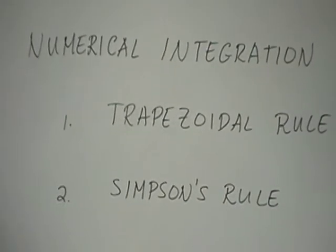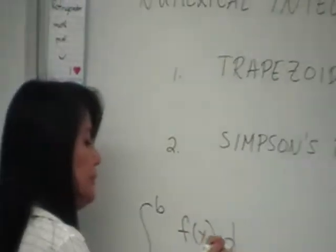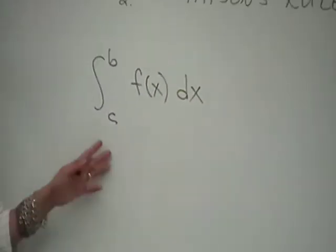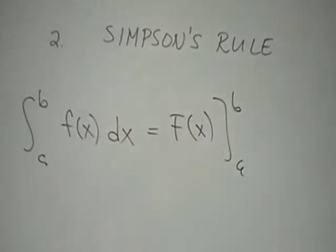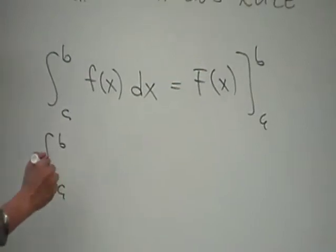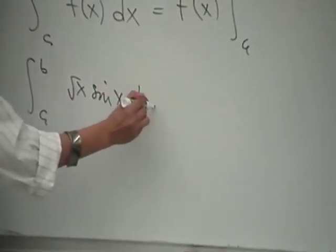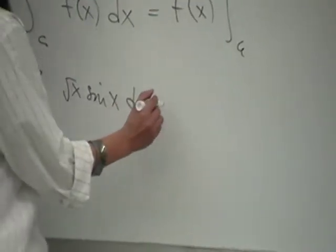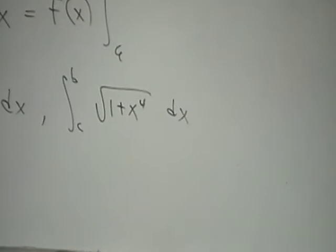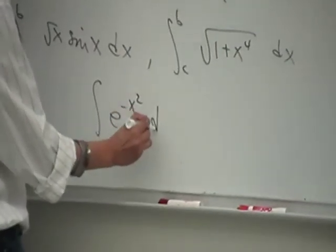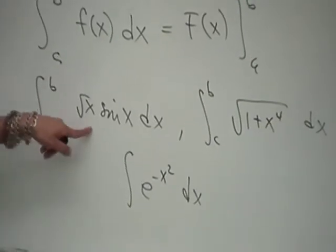So when do we actually have to use numerical integration? This all arises from having to evaluate the definite integral of f(x) dx from a to b. It's nice if you can easily find the antiderivative F and just evaluate from a to b. But what if we have weird functions? Suppose we want to integrate something like the square root of x times sine x, or square root of 1 plus x to the 4th. There is no elementary function — no big F — that gives you the antiderivative of these integrals.